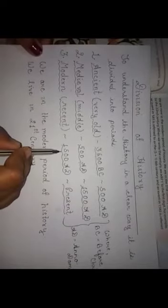Third is modern period which is recent, which starts from 1500 AD till present. Here, BC and AD, BC refers before Christ and AD refers anno domini.